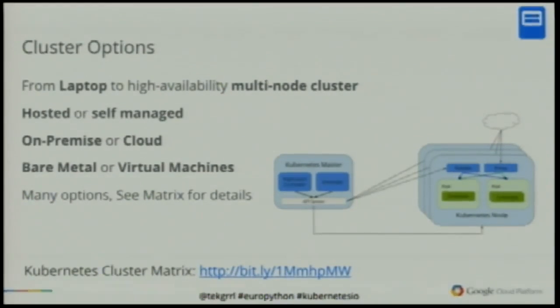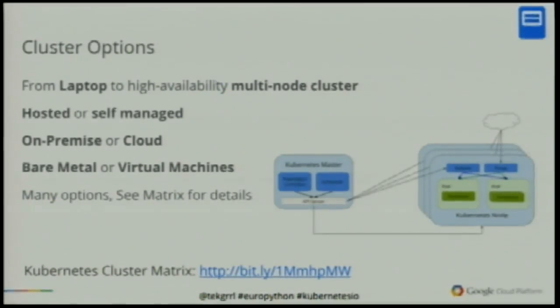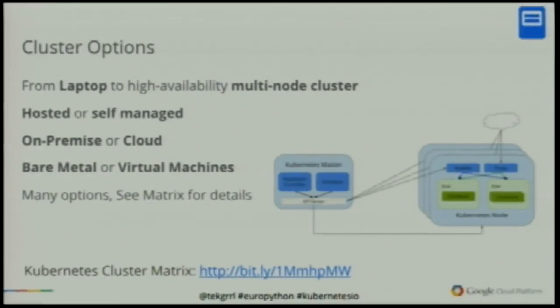The options for clusters are laptops, multi-node clusters, hosted or self-managed, on-prem or cloud-based using virtual machines, or bare metal. There are many options. There's a matrix at a short link that gives you options for how to run Kubernetes on what you want. The networking is quite tough — Google Compute Engine makes it easy because of IP addressing, but often we have to put in another layer called flannel to provide the ability to give an IP address to a running pod.